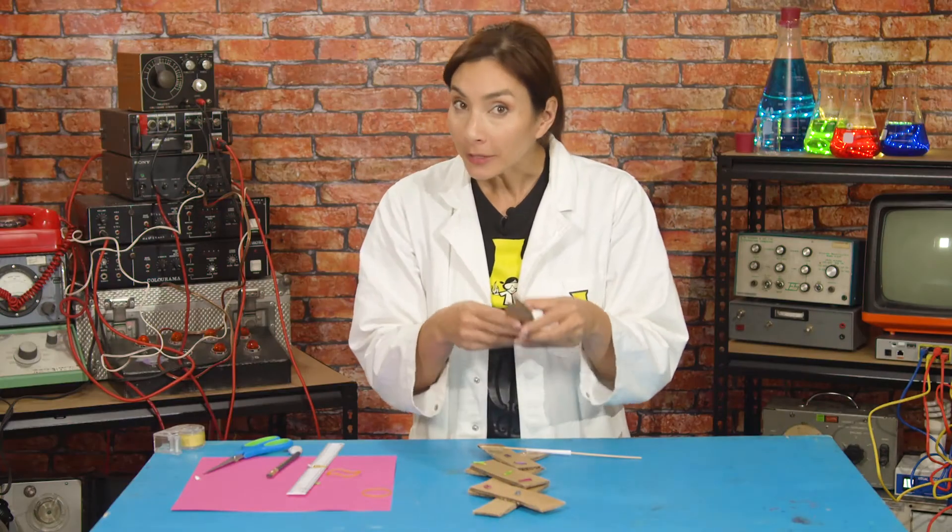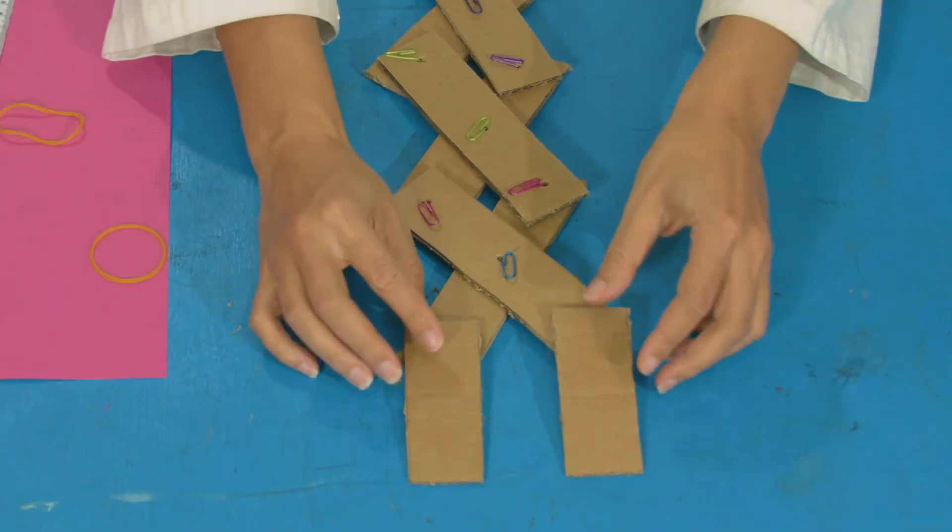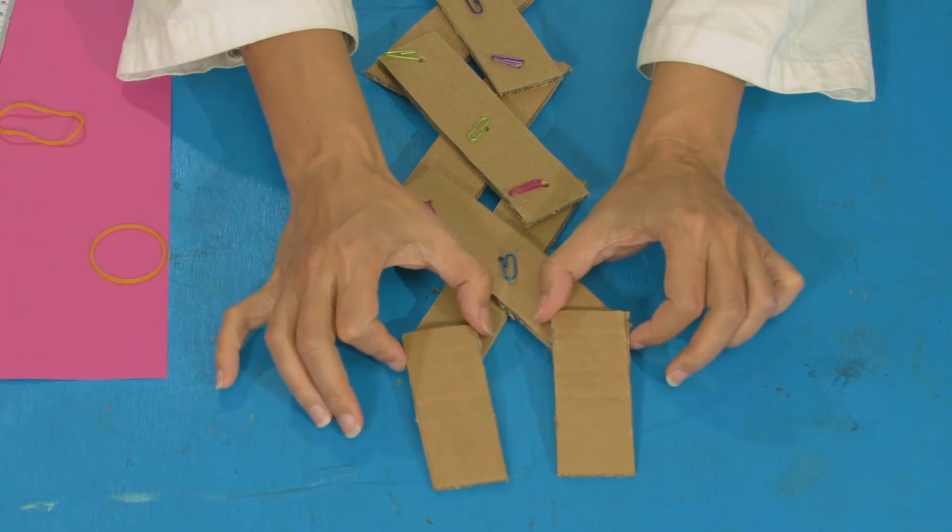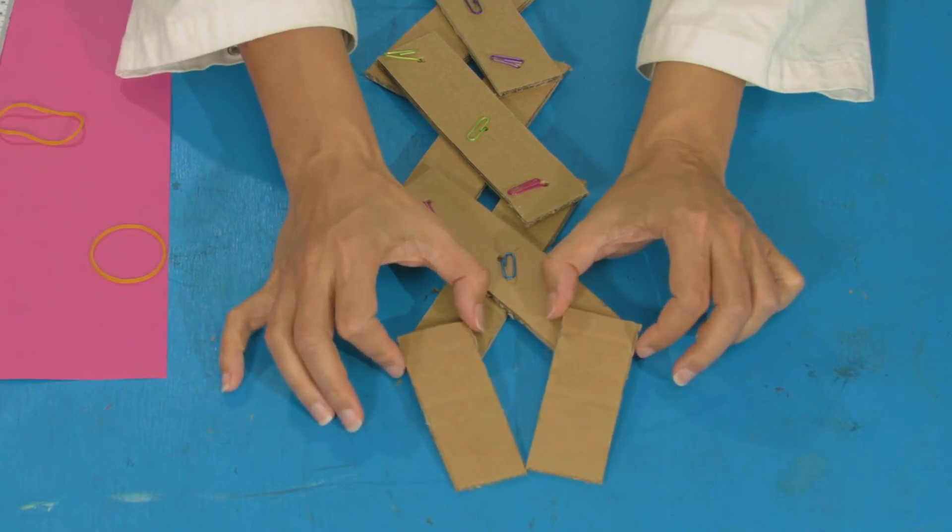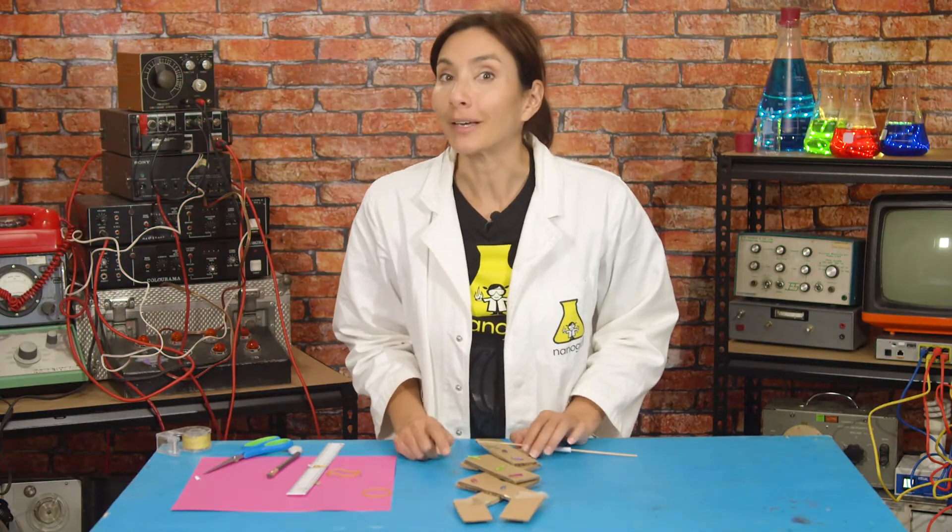So you need to take your two pieces of card, the shorter ones from earlier, and position them vertically at the top of your extender arms here. And then you're going to point them slightly towards each other so the tips touch like that. And then tape them into place. So that's my grabber arm done.